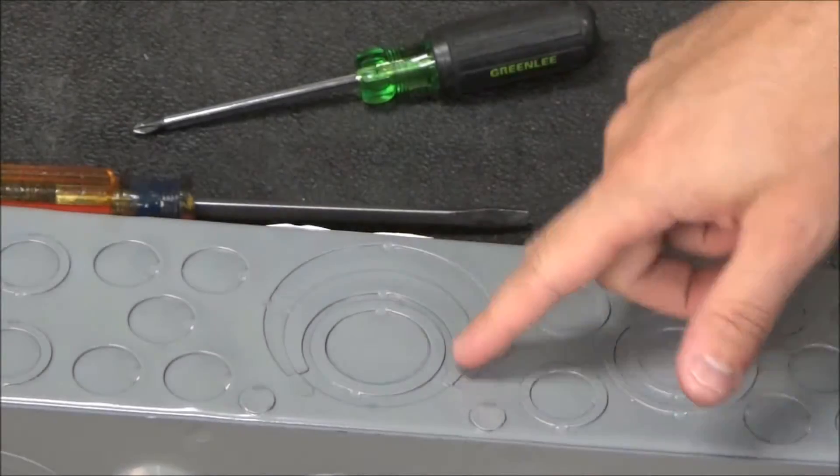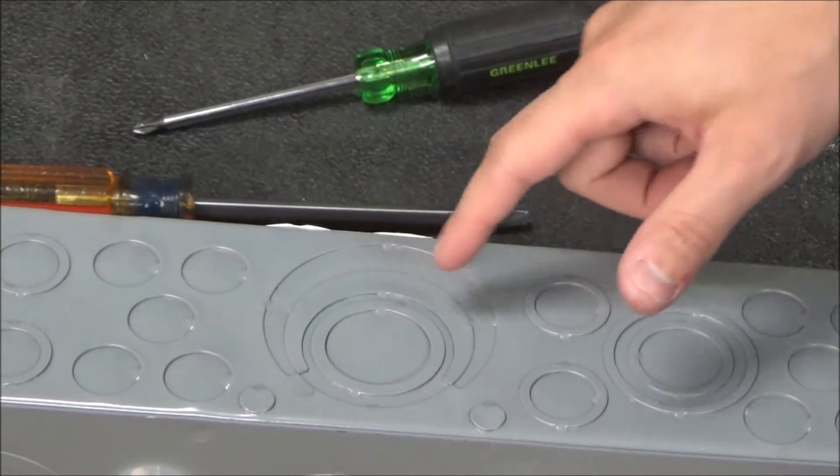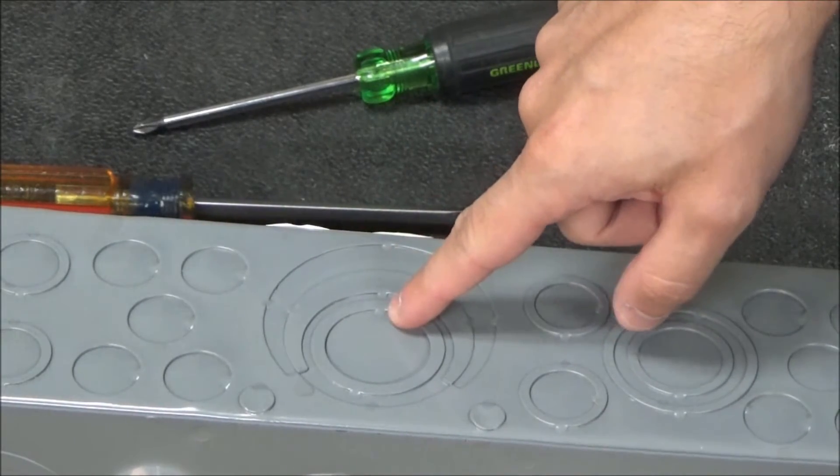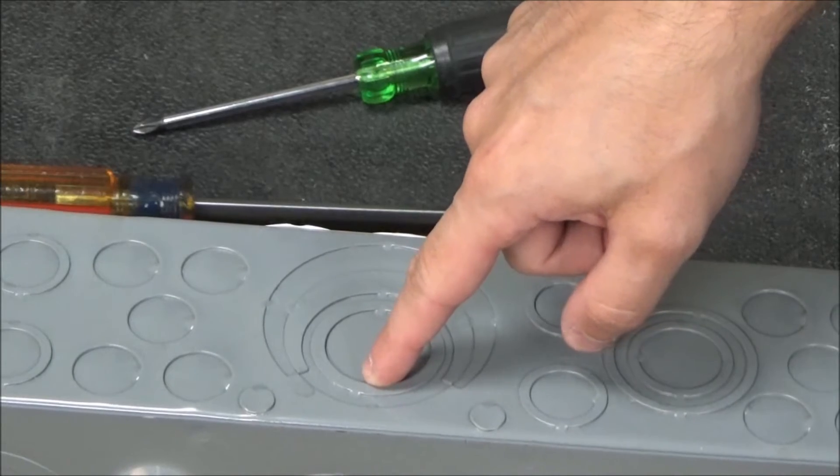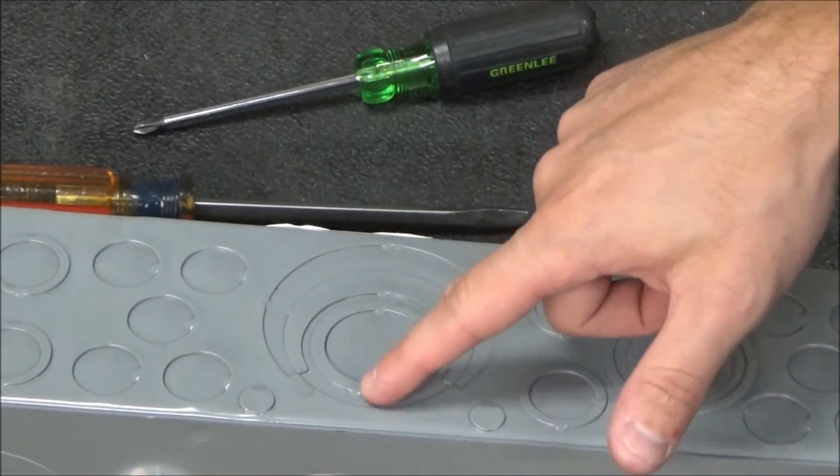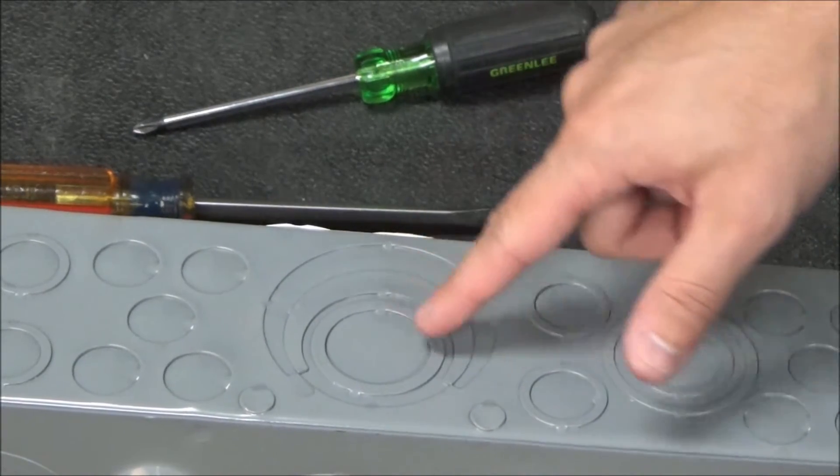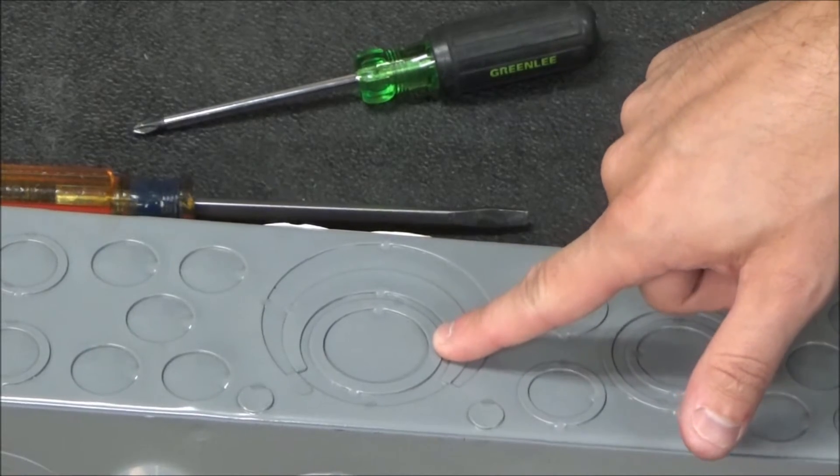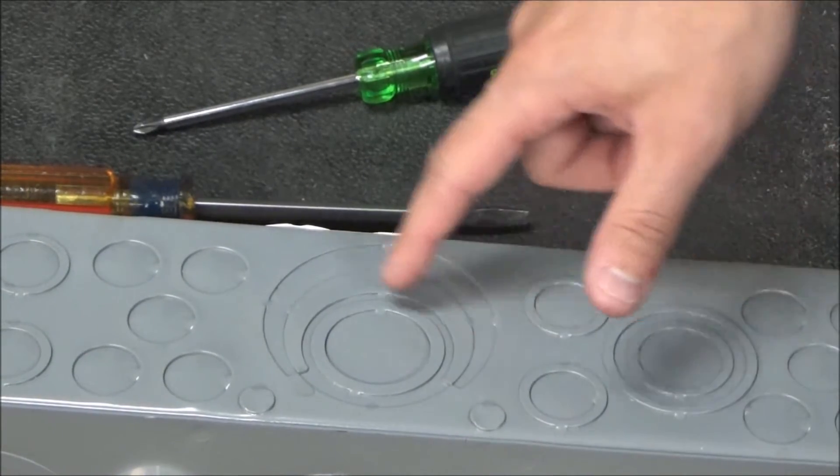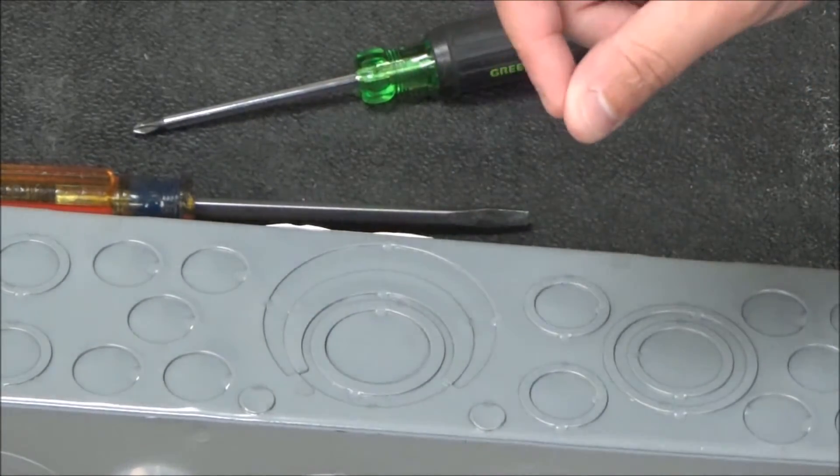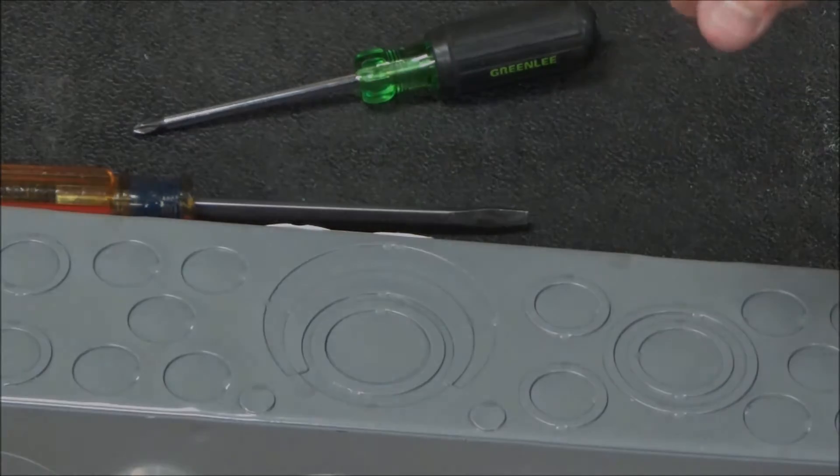You'll notice that the knockouts have spot welds which connect them to the load center. This one has one, so you go to the opposite and that's where you'll knock it out. This one has two, so you'll go in the middle to knock it out. And if it has three, you just find your way in between them and that's how you'll knock it out and remove it.